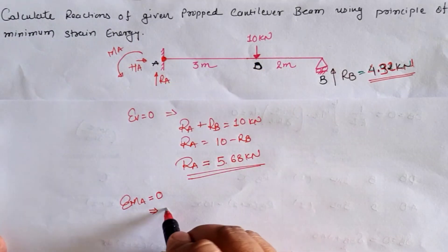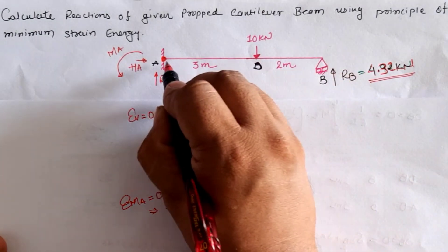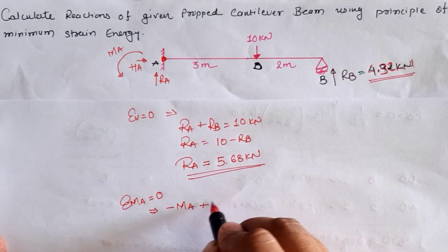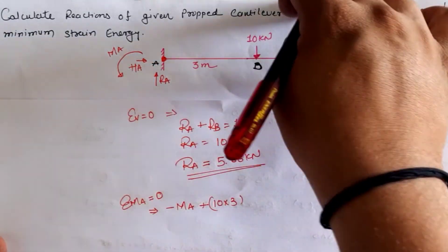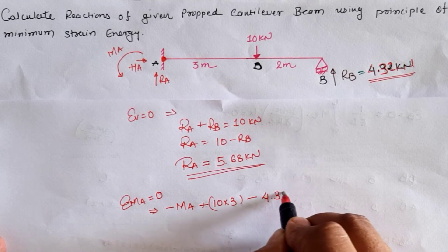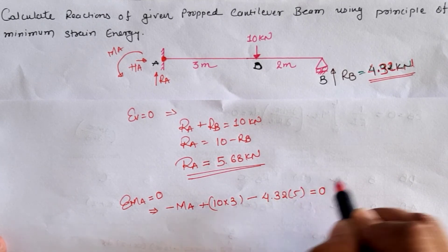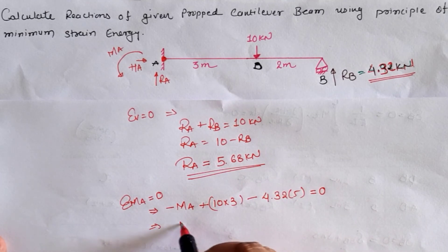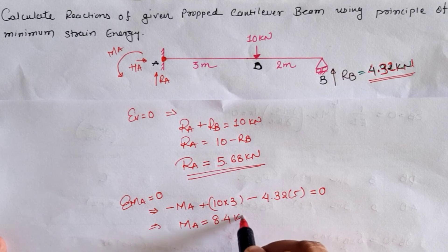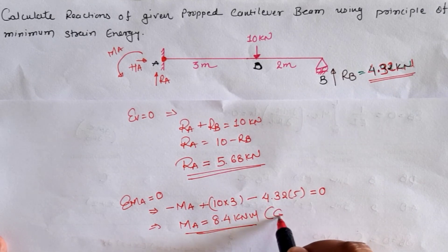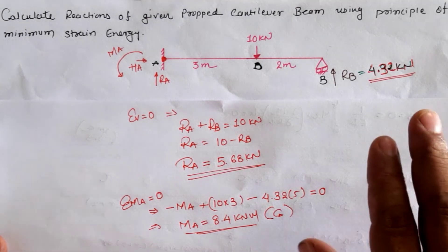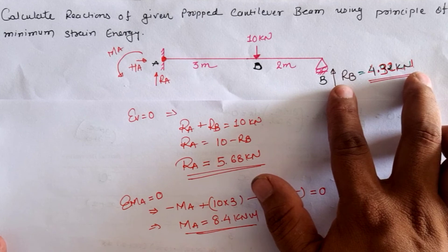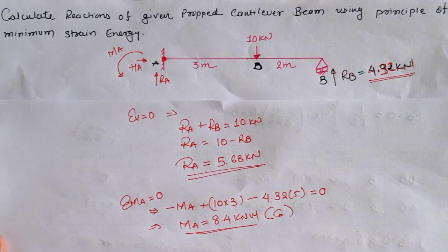Applying the third equilibrium condition ΣM_A = 0: −MA + 10 × 3 − 4.32 × 5 = 0, giving MA = 30 − 21.6 = 8.4 kNm, anticlockwise. Thus, using Castigliano's second theorem we can calculate any redundant force, and from that determine all remaining support reactions.